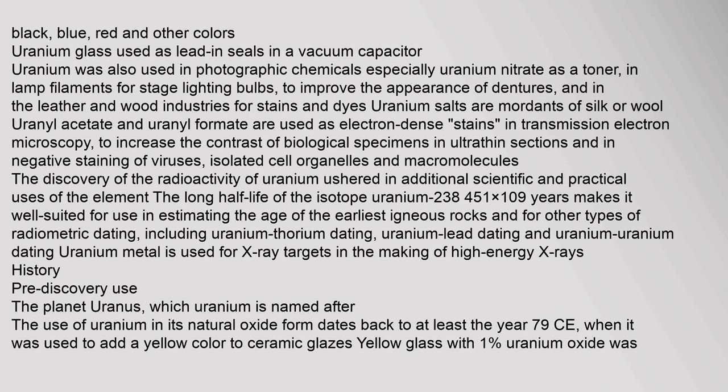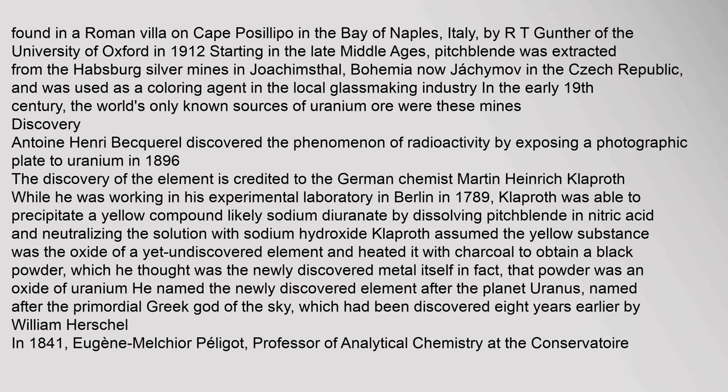The use of uranium in its natural oxide form dates back to at least the year 79 CE, when it was used to add a yellow color to ceramic glazes. Yellow glass with one percent uranium oxide was found in a Roman villa on Cape Posilipo in the Bay of Naples, Italy, by R.T. Gunther of the University of Oxford in 1912. Starting in the late Middle Ages, pitchblende was extracted from the Habsburg silver mines in Joachimsthal, Bohemia, now Jáchymov in the Czech Republic, and was used as a coloring agent in the local glassmaking industry.